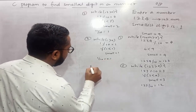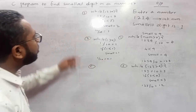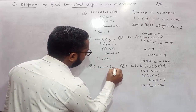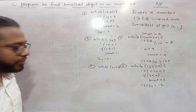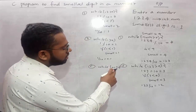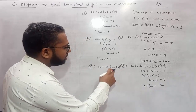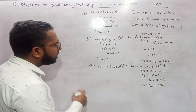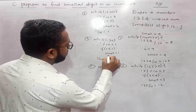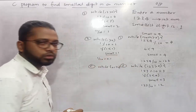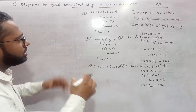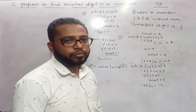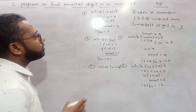Then 1 divided by 10 gives 0. Control goes back to the while loop: while 0 is greater than 0 — no, this condition is false. So control exits the while loop and we print the smallest value, which is `small` equals 1. This is the logic behind finding the smallest digit from any number.